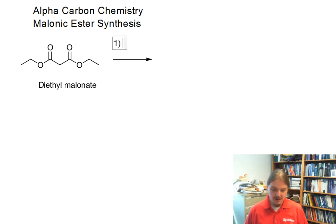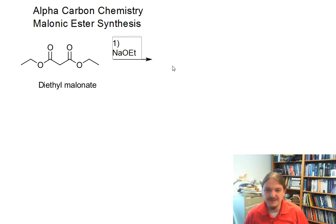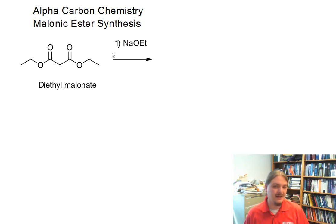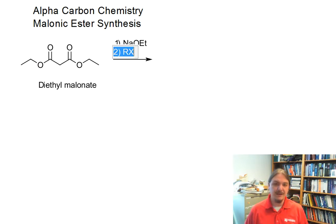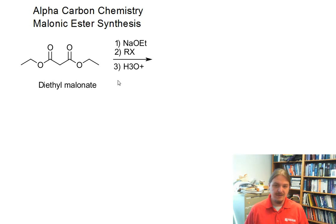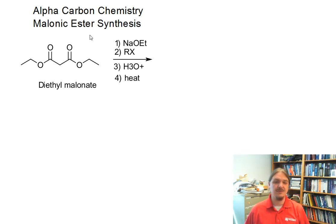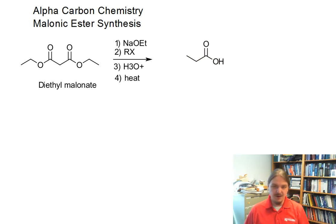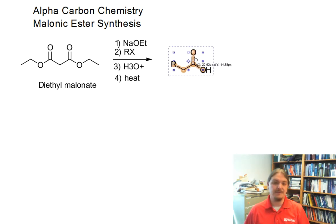This process looks like: 1) sodium ethoxide, 2) some sort of alkyl halide, 3) acid, and 4) heat. Depending on how you set up this situation, the acid and heat steps could be consolidated. The outcome of this reaction, after all is said and done, is a carboxylic acid with the R group of that alkyl halide attached at the alpha position to acetic acid.